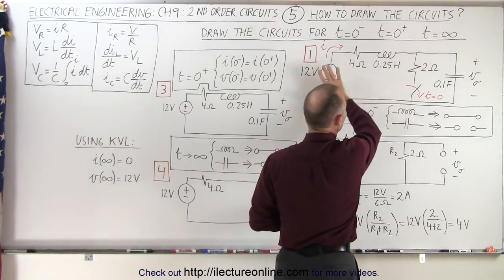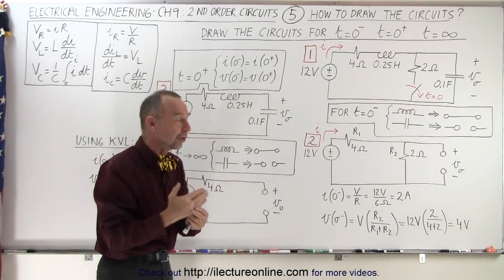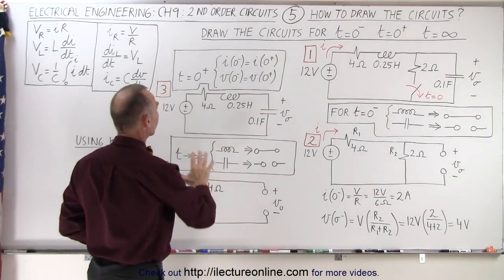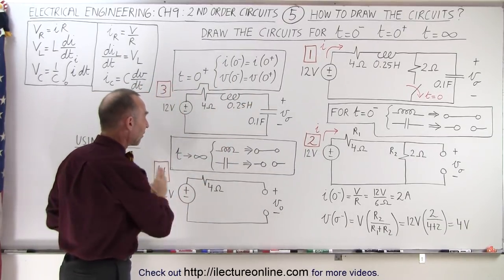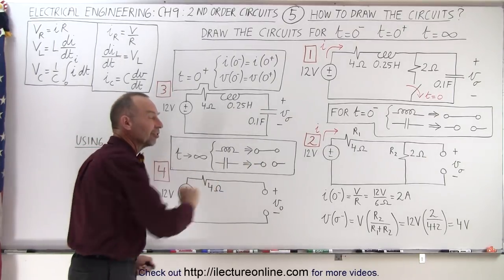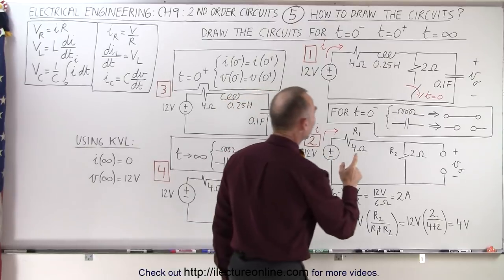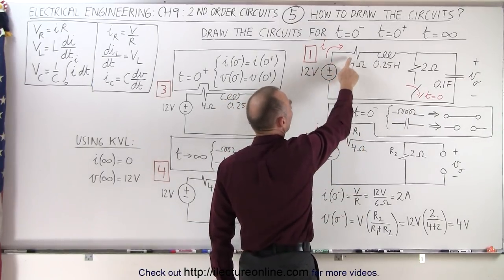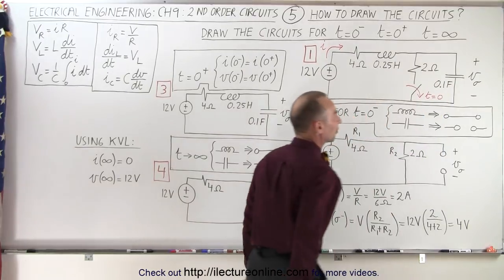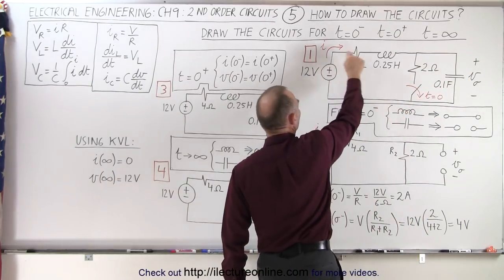At t equals zero, in this original circuit, the switch opens up. So there's an event at t equals zero, and you draw the circuit before it happens, right after it happens, and after a long time when things have settled and there's no longer any transient state. In this example, we have a 12-volt supply, a resistor, an inductor, a resistor on a branch with a switch that opens at t equals zero, and a capacitor. We want to calculate the voltage across the capacitor and the current through the circuit.